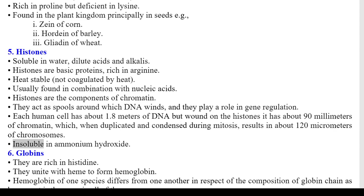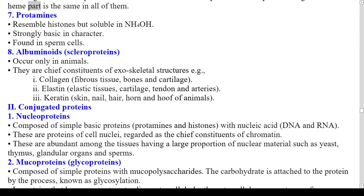6. Globins: rich in histidine; unite with heme to form hemoglobin. Hemoglobin of one species differs from another in respect of the composition of the globin chain, as the heme part is the same in all of them. 7. Protamines: resemble histones but soluble in ammonium hydroxide; strongly basic in character; found in sperm cells. 8. Albuminoids/Scleroproteins: occur only in animals; chief constituents of exoskeletal structures. Examples: collagen (fibrous tissue, bones, and cartilage), elastin (elastic tissues, cartilage, tendon, and arteries), keratin (skin, nail, hair, horn, and hoof of animals).